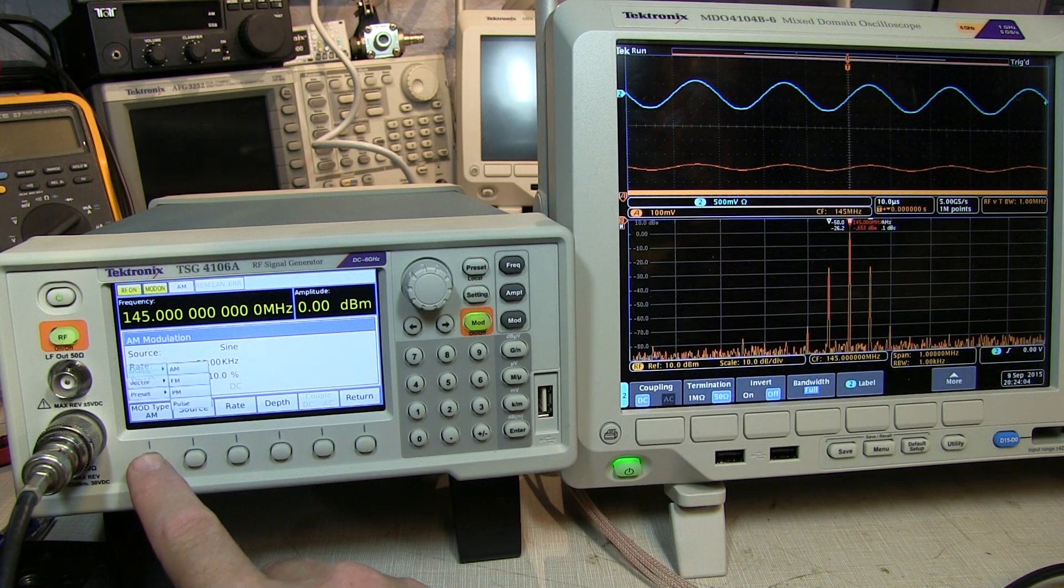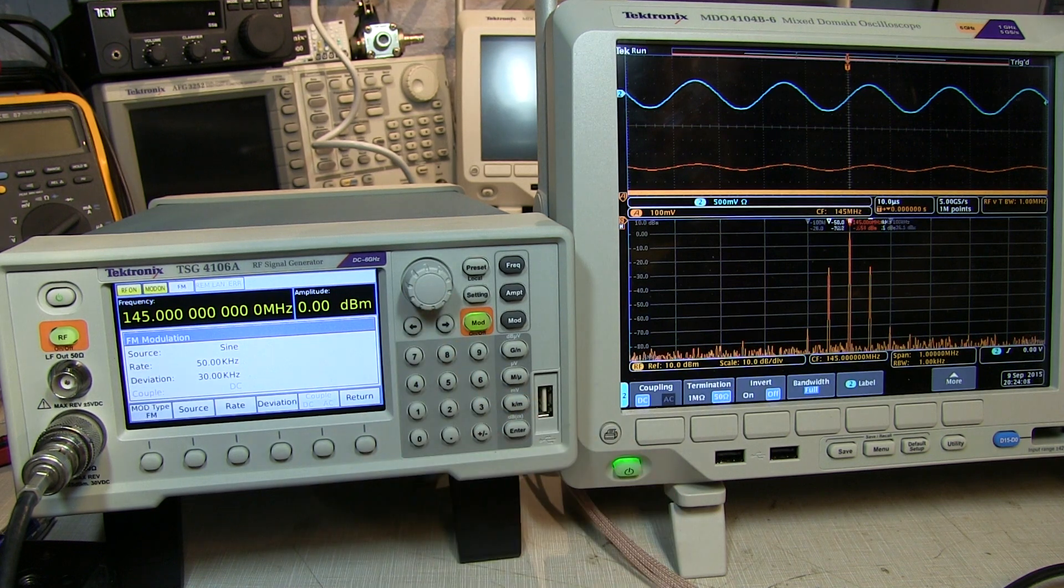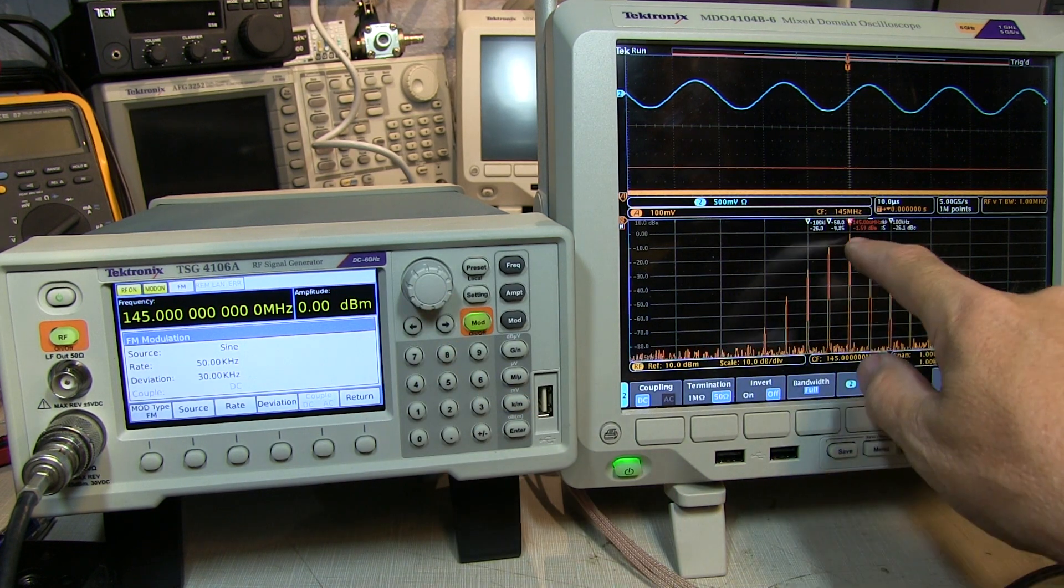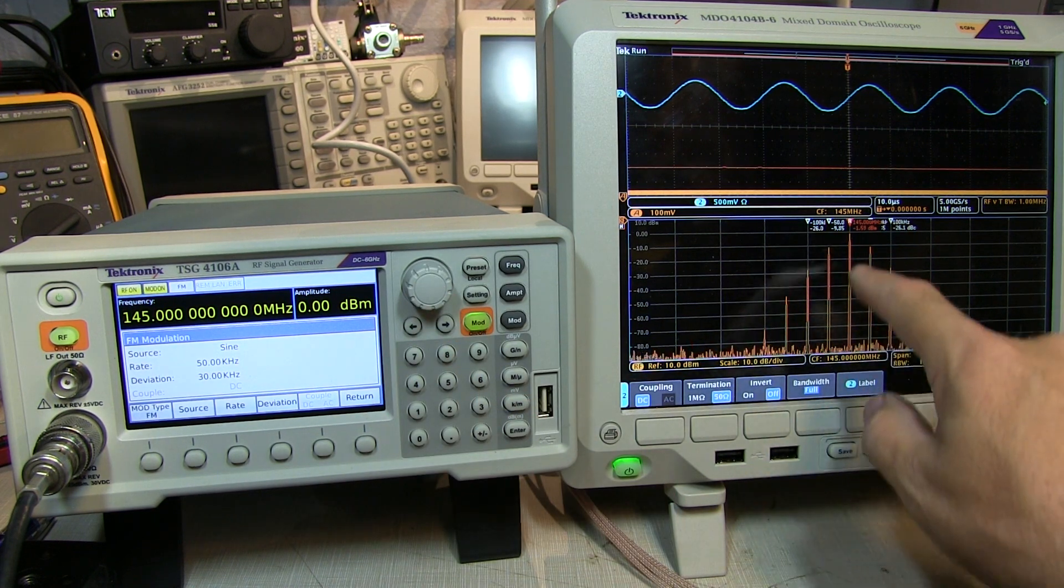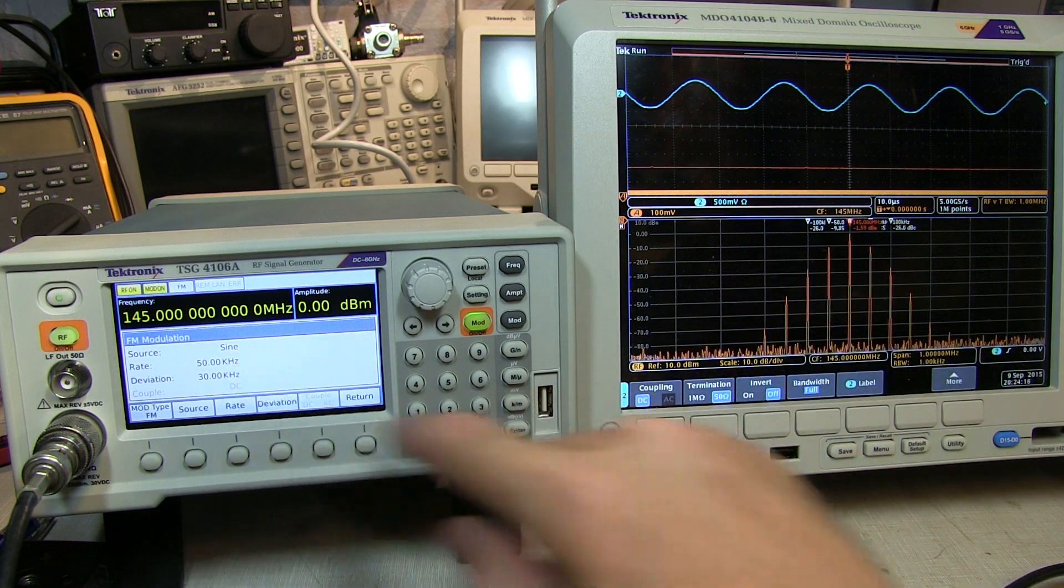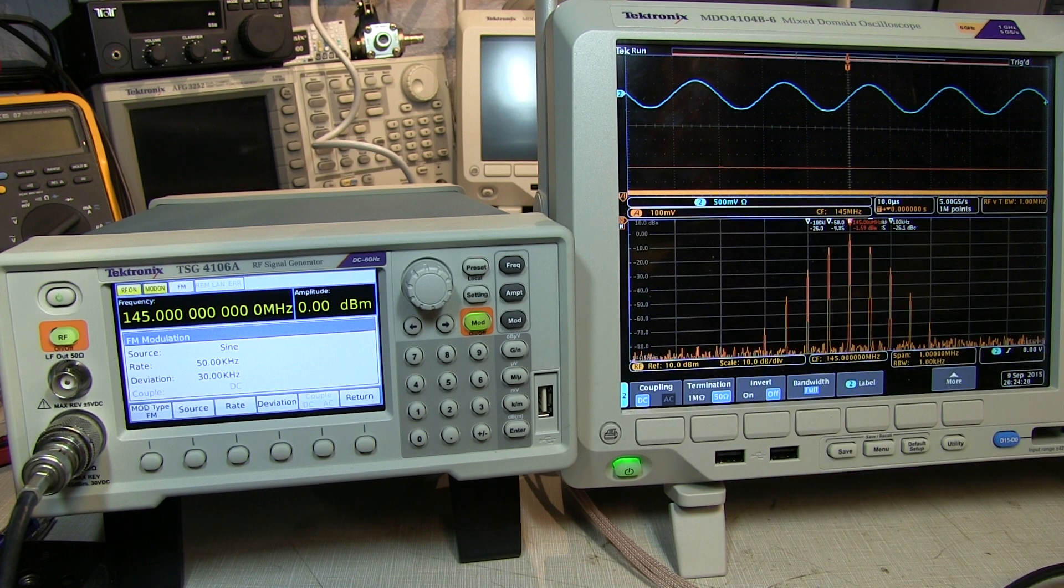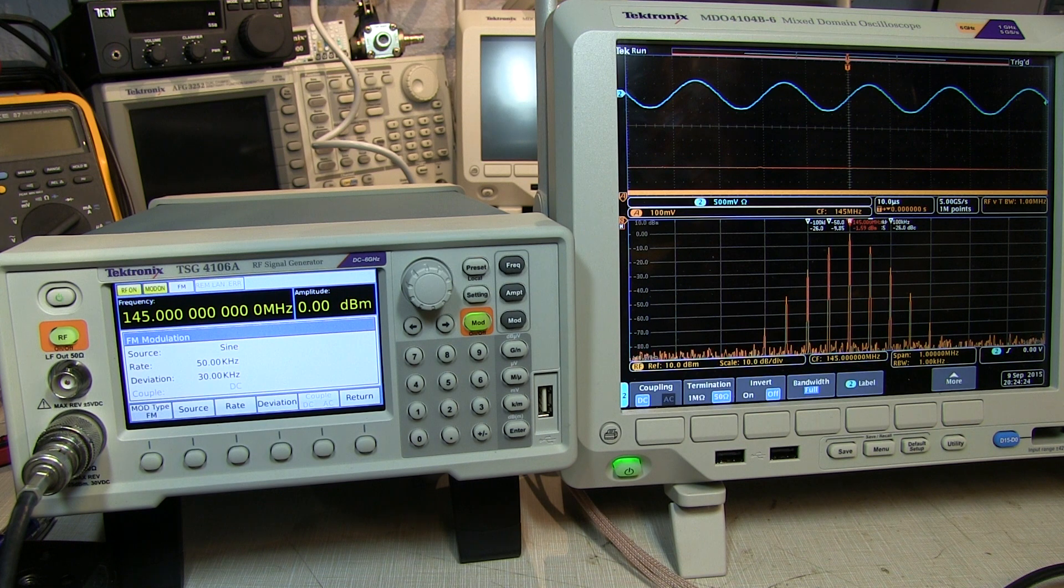Let's change the modulation type from AM to FM. And now, with FM, we can see the modulation sidebands, and it's normal to have sidebands spaced at the baseband frequency. And the amplitude of each of those is going to be determined by a set of Bessel functions. I've got a video on that that I'll link down below if that's helpful.